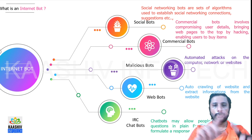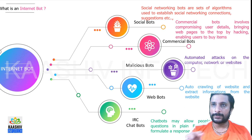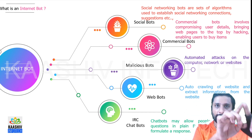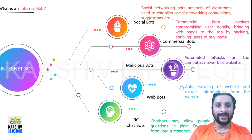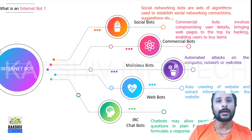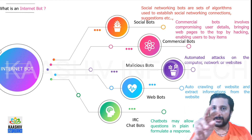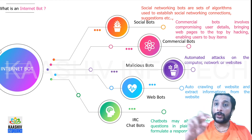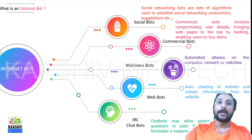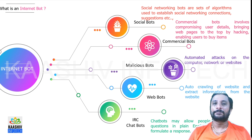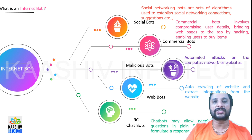IRC bots work like this: if you go to my website kashinfotech.com, a relay chat window will appear saying 'Welcome to Kashinfotech — do you want anything?' If you type 'I want internships,' an automated bot reads that text and uses artificial intelligence and machine learning techniques to give an exact answer like a human would, even though no human is sitting there. That is your Information Relay Chat bot.